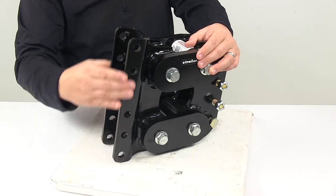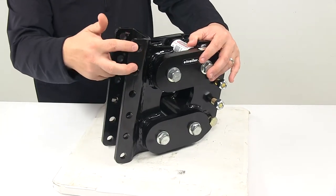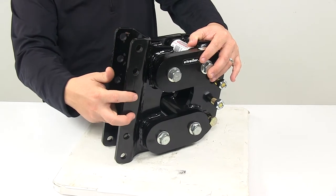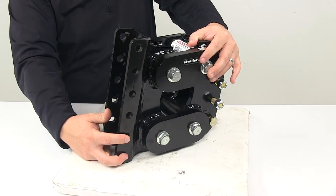These holes right here, this is where you would attach your coupler. These are separated on center by 2 inches, and each hole has a diameter of 5 1⁄8 of an inch.